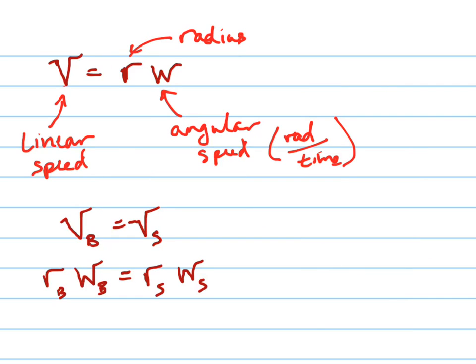So here's the formula for linear speed. The linear speed is equal to the radius times the angular speed in radians per time.